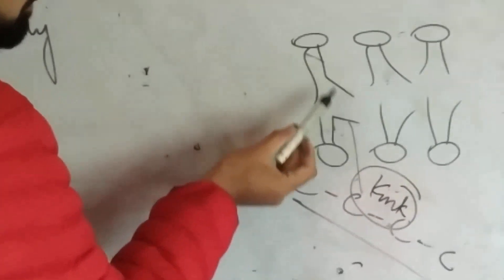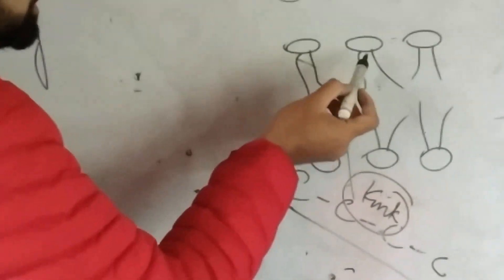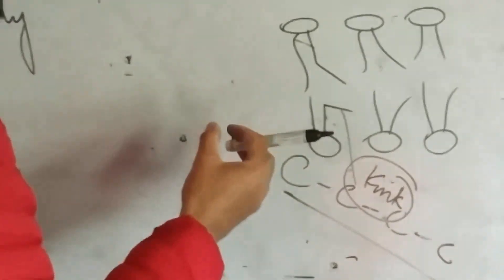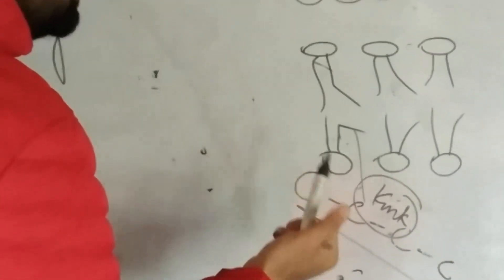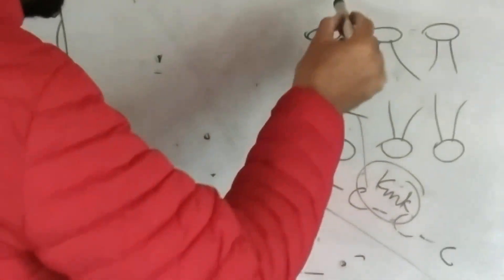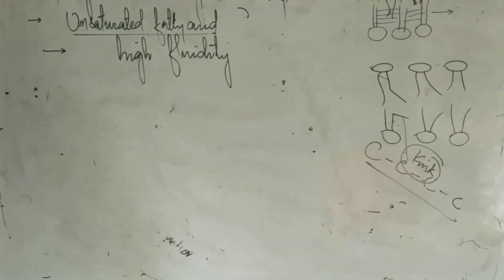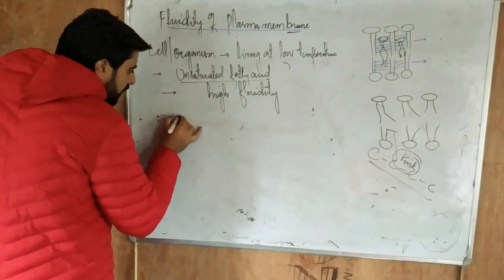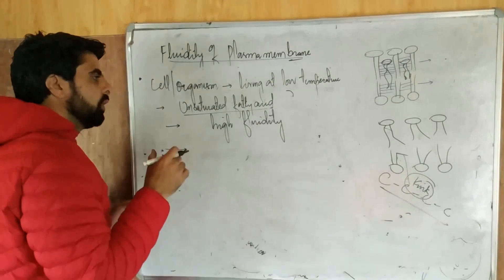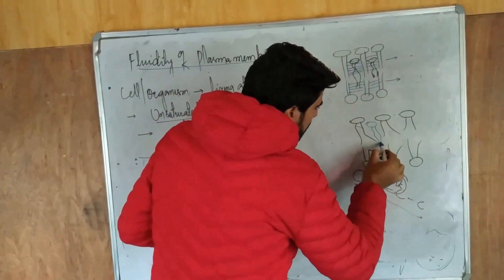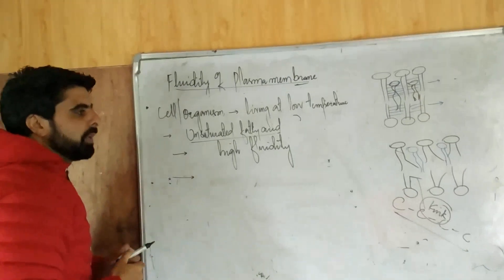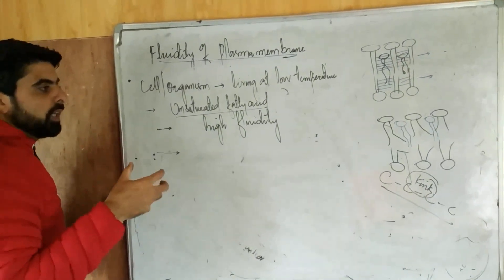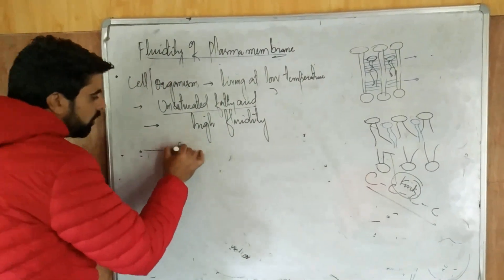If you have an organism living at low temperature, they have unsaturated fatty acids, which means high fluidity. Because unsaturated fatty acids have a kink — due to the double bonds between carbon and carbon, we call this a kink. Because of this kink, hydrophobic interactions are not as strong, so the membrane is more fluid. So if you have a kink and then add cholesterol, when cholesterol comes in between, it will increase the rigidity of the plasma membrane, making it less fluid.